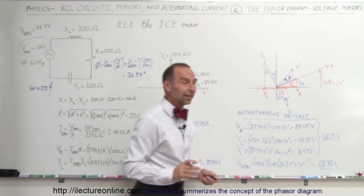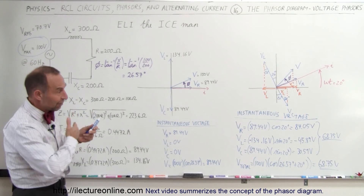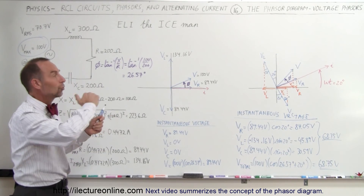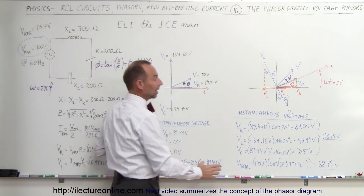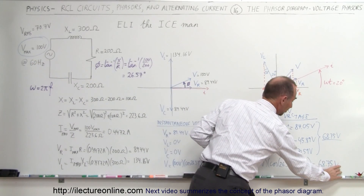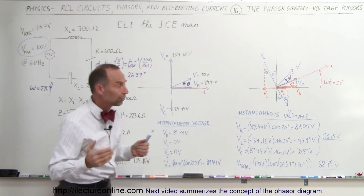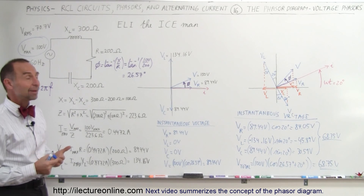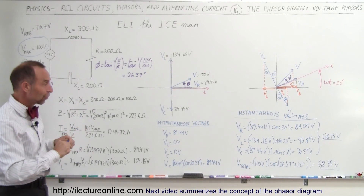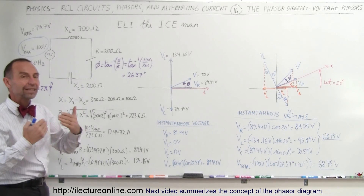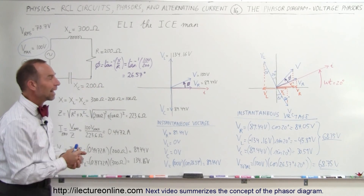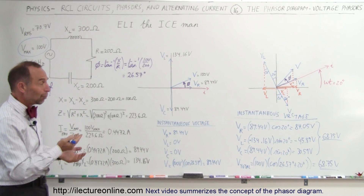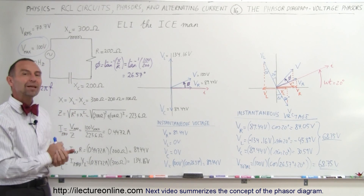So that gives us, at that moment in time, after enough time has passed so that the circuit has gone through 20 degrees of its total cycle, the total voltage of the circuit is 68.75 volts. We're also able to calculate the individual voltages of each component at any point in time. That's what phasor diagrams are so useful for — they allow us to calculate the voltage at any point in time by projecting the voltages down to the horizontal axis. Hopefully by now it's starting to make some sense to you.